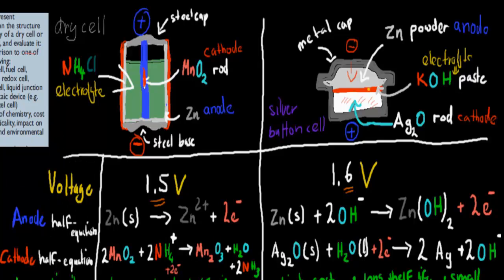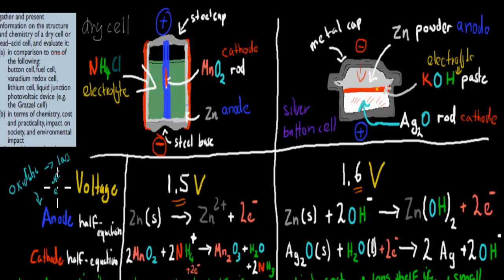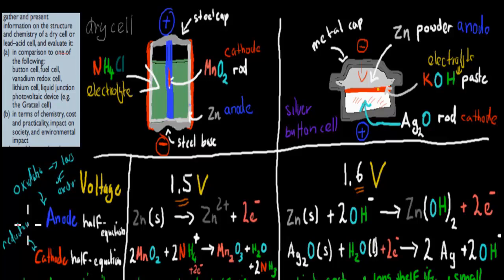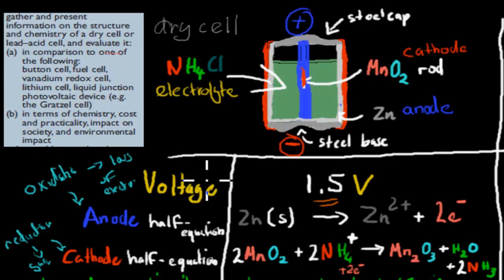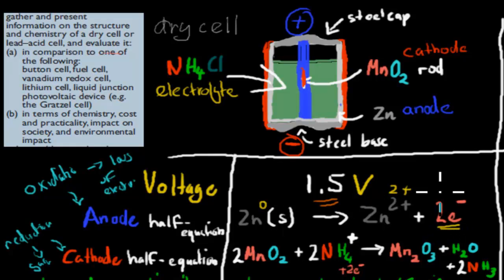At the anode, oxidation occurs — the loss of electrons. Zinc goes from elemental zinc (oxidation state 0) to zinc ions (Zn²⁺, oxidation state +2). Its oxidation state has increased from 0 to +2, so it's been oxidized, losing 2 electrons. Zinc has been oxidized.